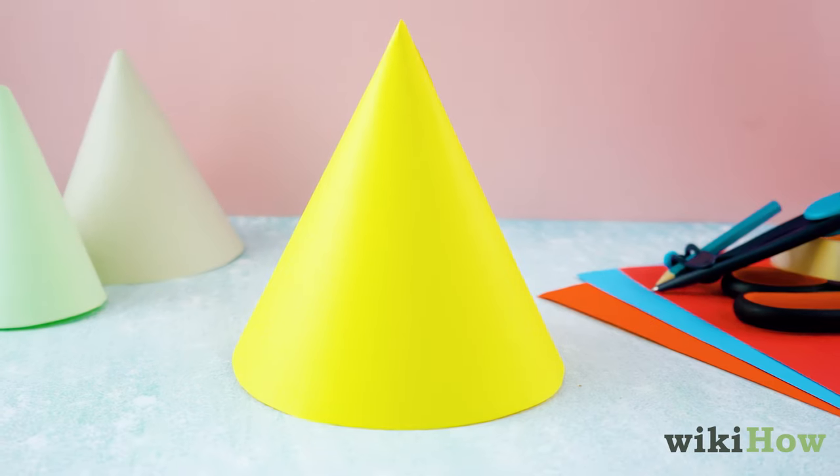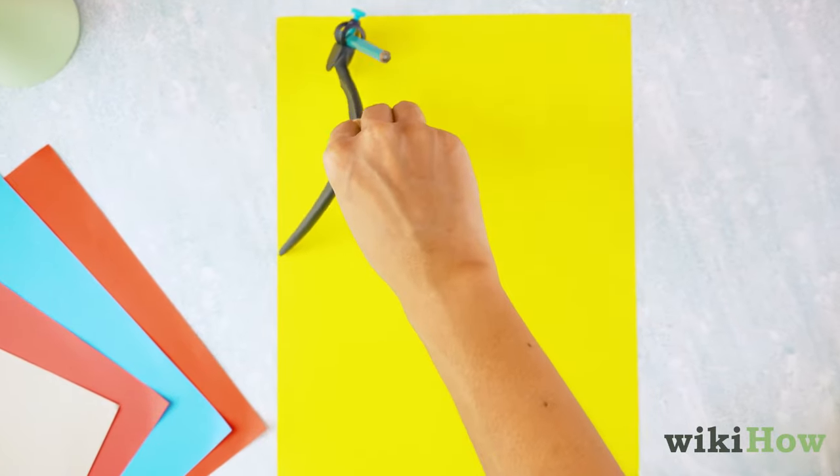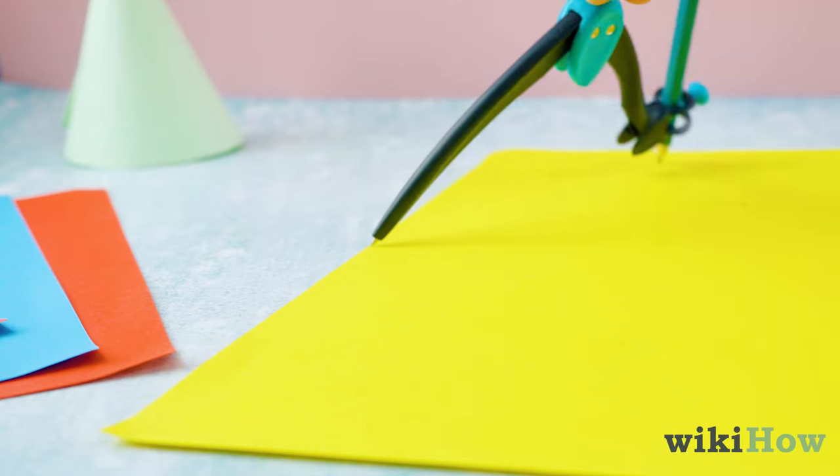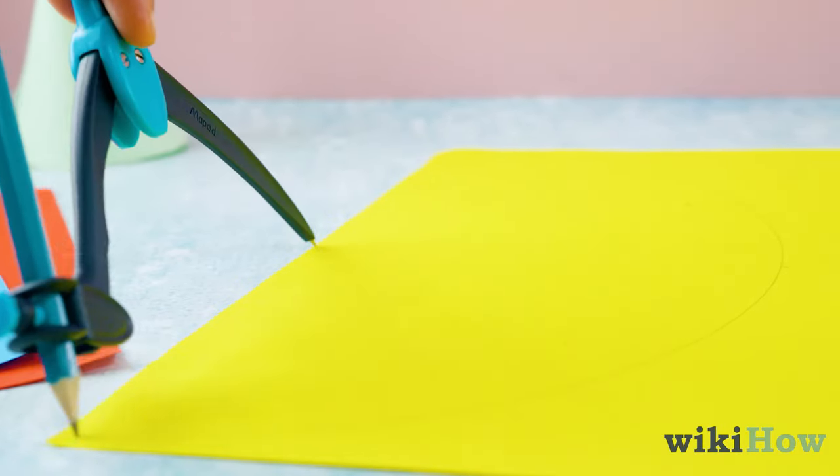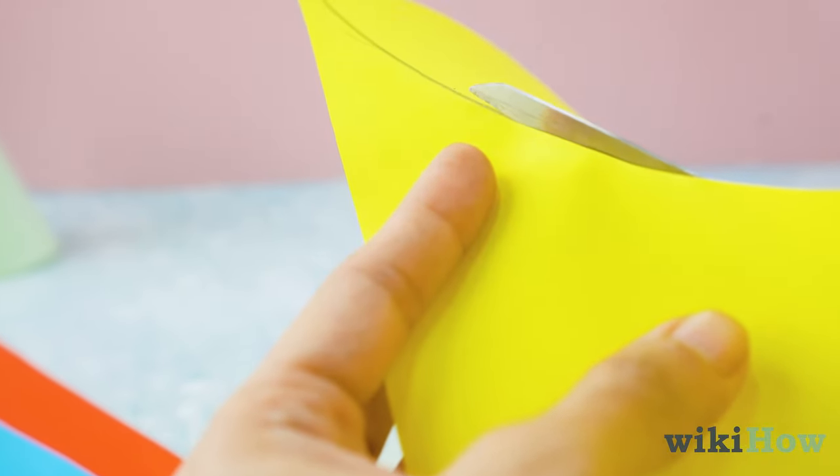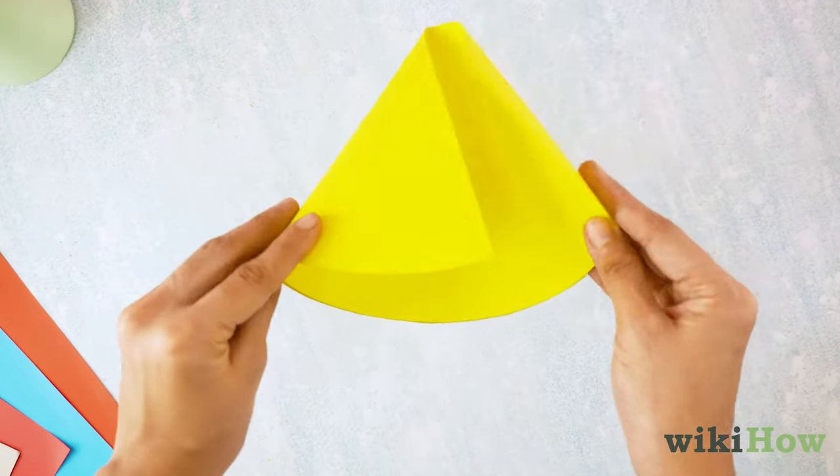To make a paper cone hat for parties, first draw a half circle that's between 6 to 8 inches (15 to 18 centimeters) across a piece of construction paper using a compass. Then cut out the half circle and bring the ends together to form the cone.